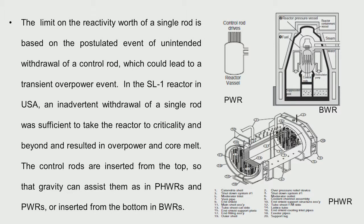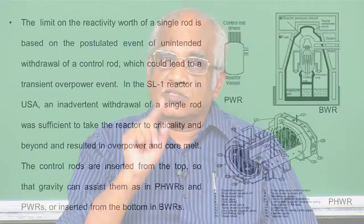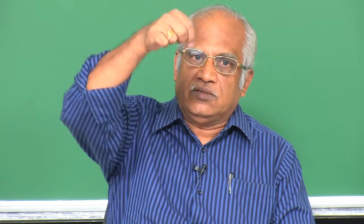We have a redundant number of control rods in any reactor. A key design criterion is that even if you take one control rod completely from bottom to top, the reactor must not become critical — it requires some more rods to be raised to become critical. This is recalled from the SL-1 reactor accident, where a control rod was inadvertently taken out continuously, taking the reactor to criticality and beyond, causing fuel melt.